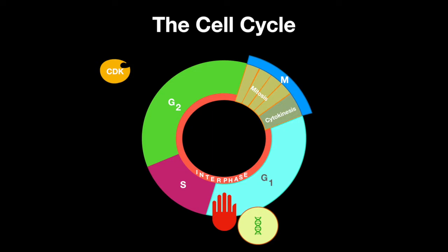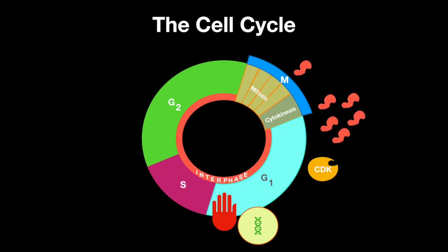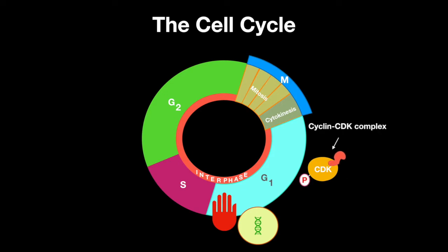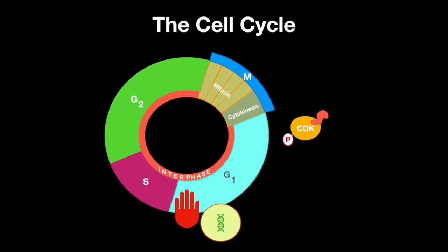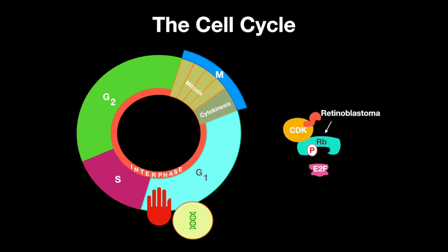Cyclin-dependent kinases, or CDKs, are always expressed in the cell. Cyclins are proteins that are expressed only during certain phases of the cell cycle. When cyclin concentrations rise, cyclin binds to CDK, forming a cyclin-CDK complex, which can then phosphorylate retinoblastoma.